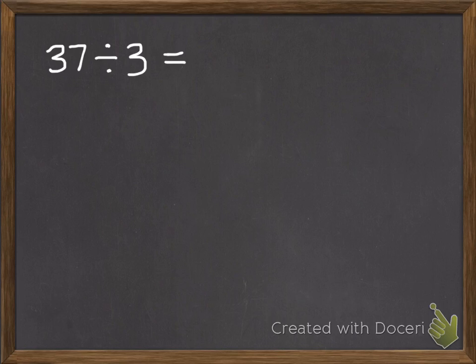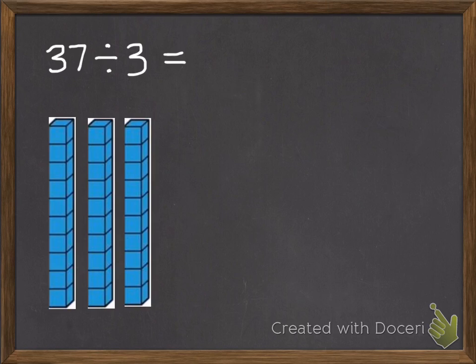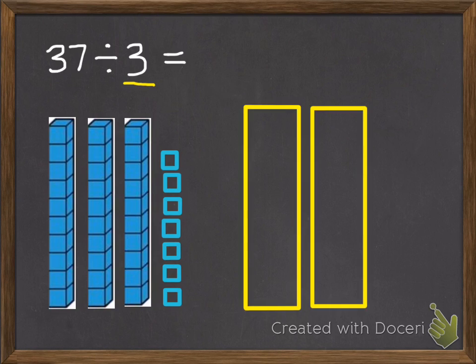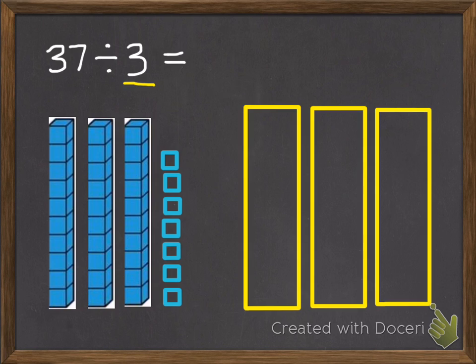So if we have 37 things and we're dividing them between 3 people, we can use our place value blocks. So there's 37. And then we're going to divide these between 3 groups or 3 people. So there's my 3 groups. Then I'm going to move these into my groups so that each person or each group has the same amount, so that it's fair.